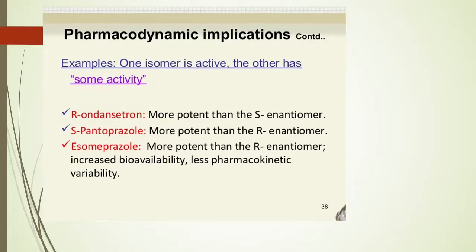The next examples are of distomers which have some activity — less active, I will say. The first is R-ondansetron: R-ondansetron is more potent than the S-enantiomer, meaning S has less activity and R has greater activity. Then S-pantoprazole is more potent than the R-isomer. And for esomeprazole, the S form is more potent than the R-enantiomer, with increased bioavailability and less pharmacokinetic variability. This is how R and S can show less activity than the other isomer.